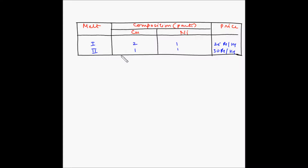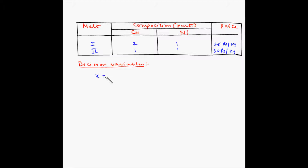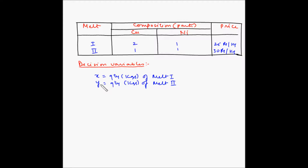Let us formulate this into an LP model. The first step in LP model formulation is to decide on the decision variables. In this problem we have to find the quantity of melts of each type to be used in the new alloy. Let x be the quantity in kgs of melt one and y be the quantity in kgs of melt two. So x and y are the decision variables.